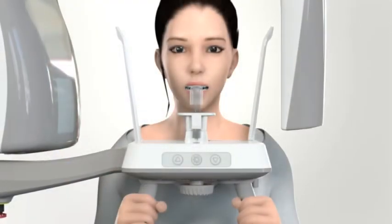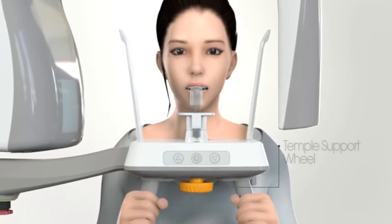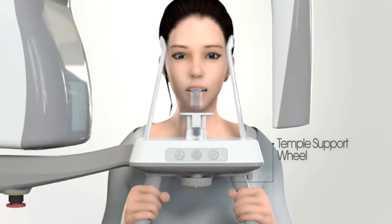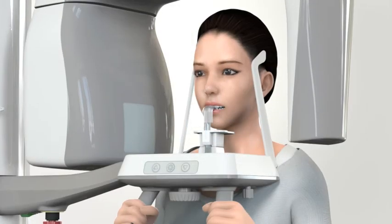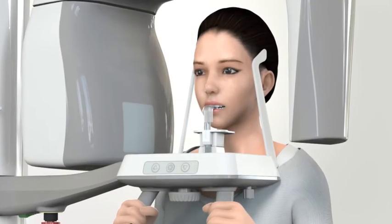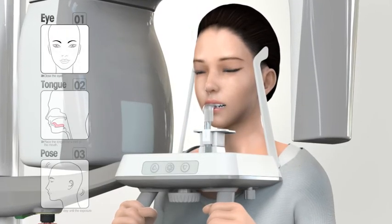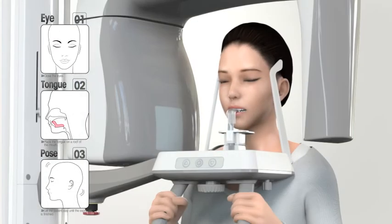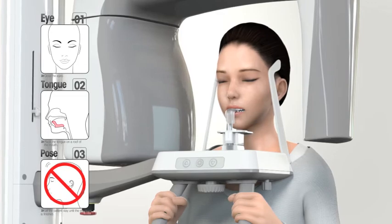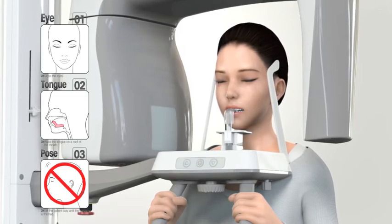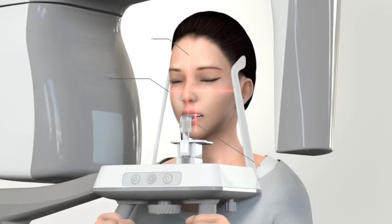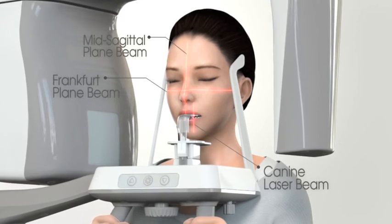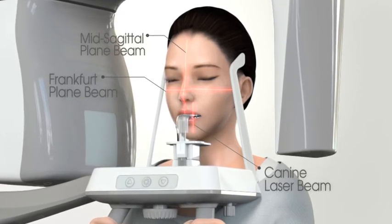When everything is ready, rotate the temple support wheel to tighten the temple support and stabilize the patient. During image capturing, ask the patient to close their eyes and place the tongue to the hard palate. Instruct the patient not to move until the image capturing is completed. The operator should confirm that all three beams are placed appropriately before capturing the image.